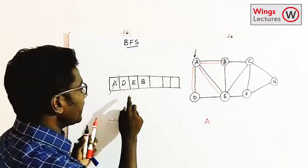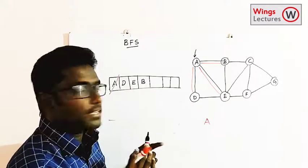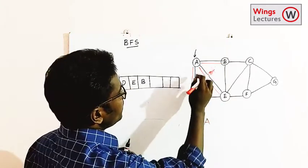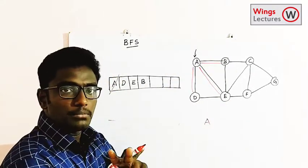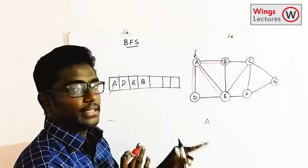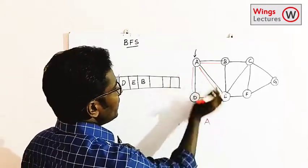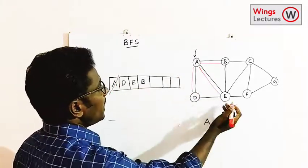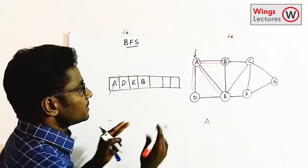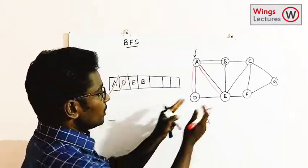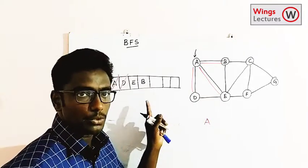The next vertex in the queue is D. Find the adjacent vertices of D — which are A and E. But A and E are already in the queue: A is already visited and E is going to be visited next. So there is no need to add any new vertex from D.